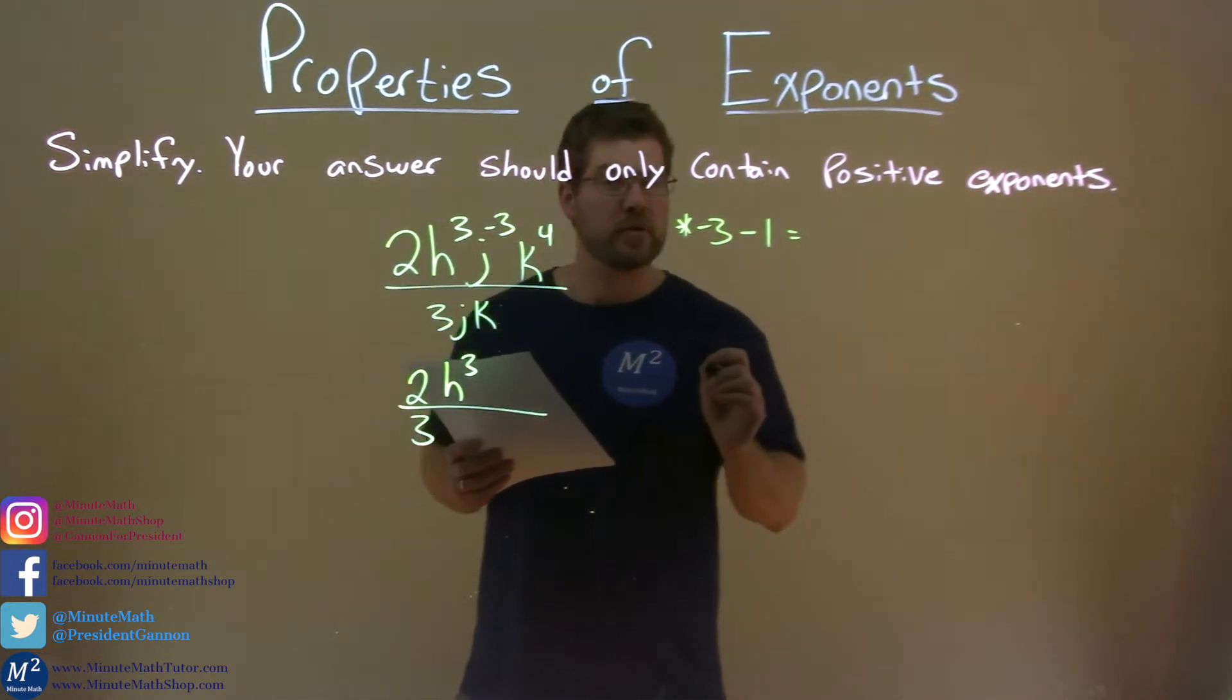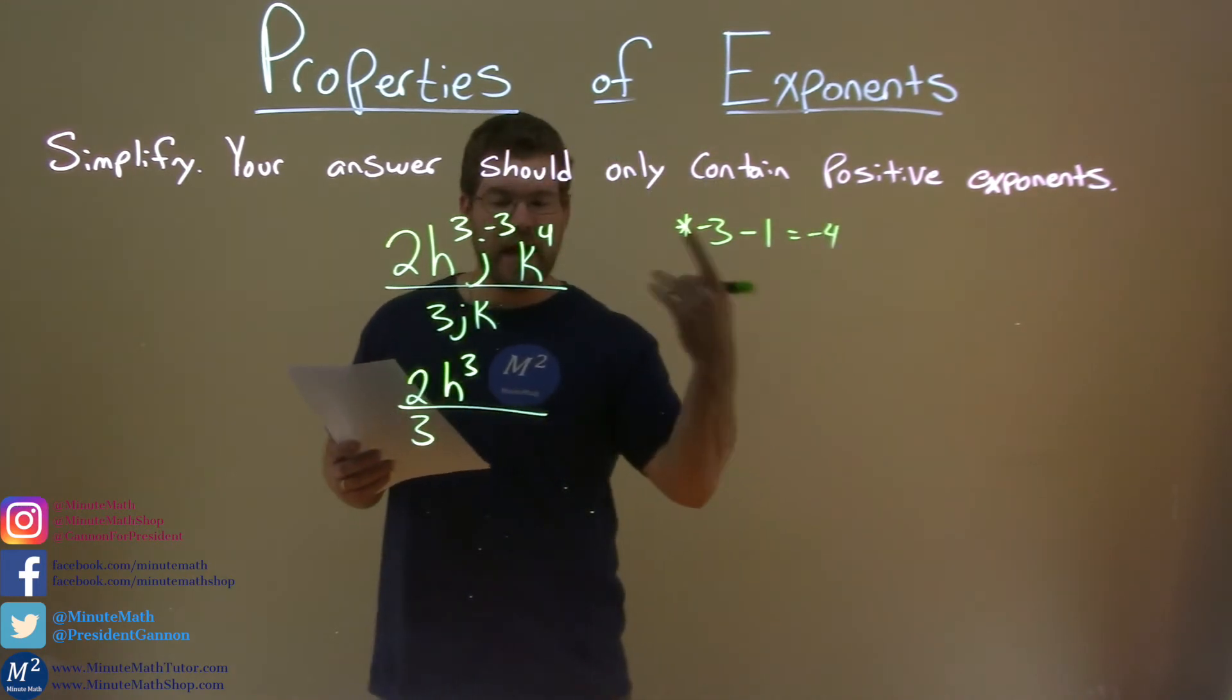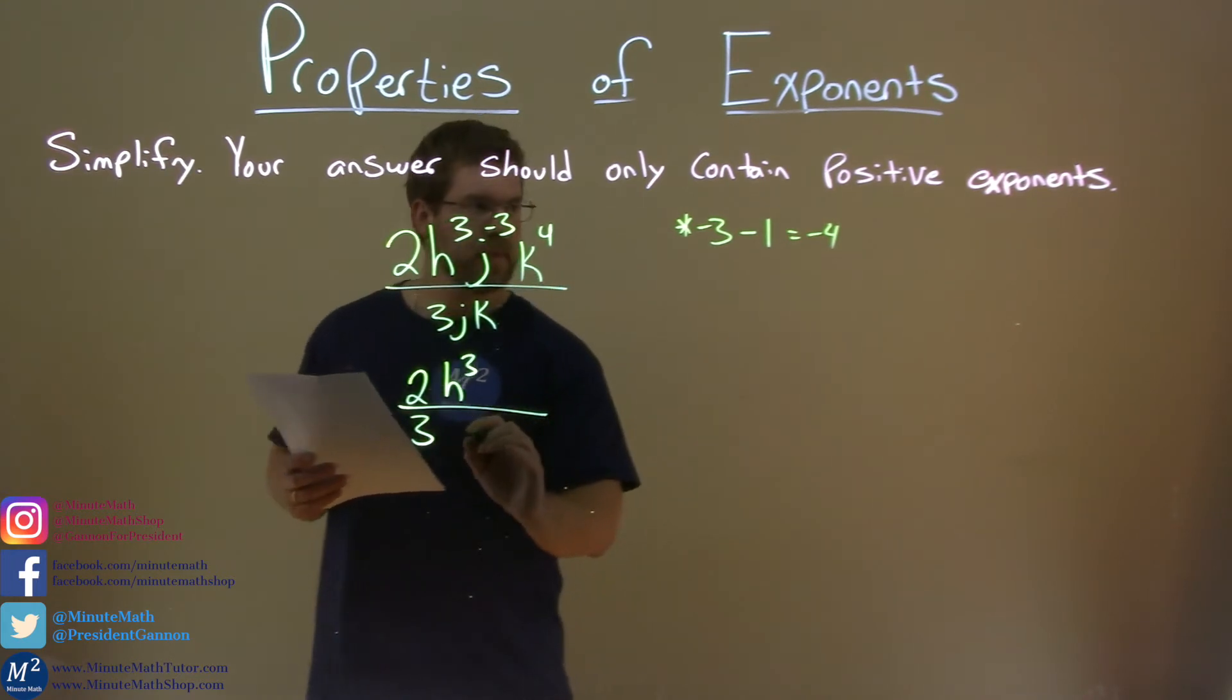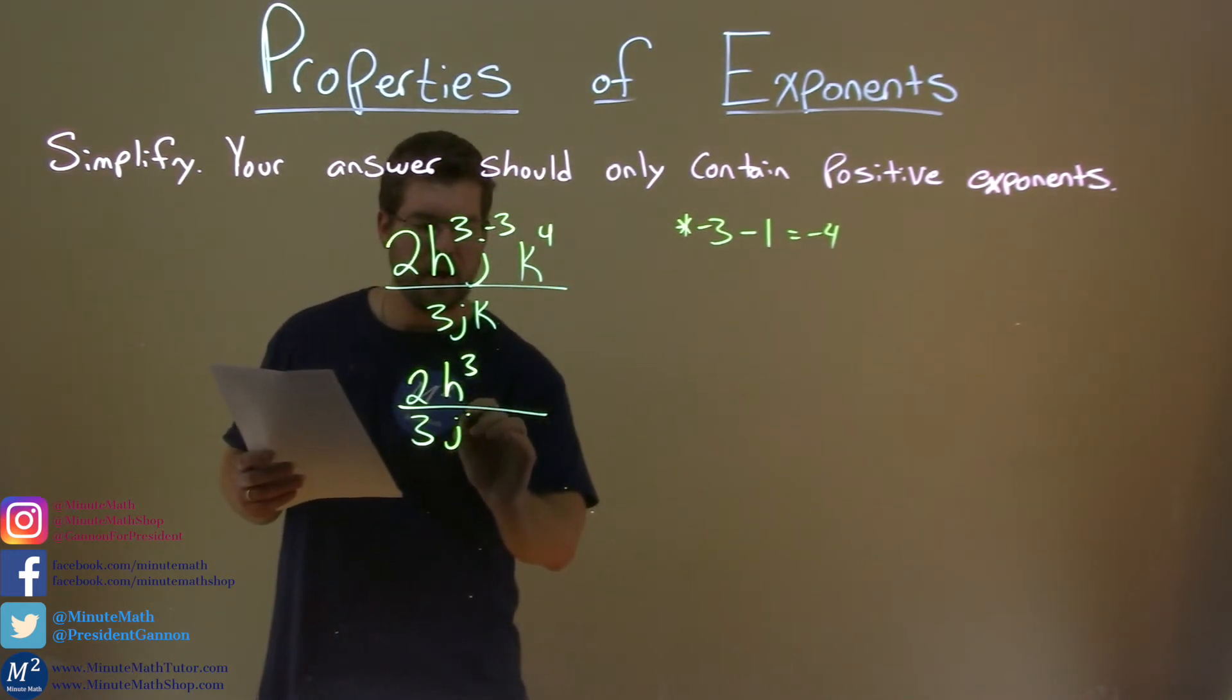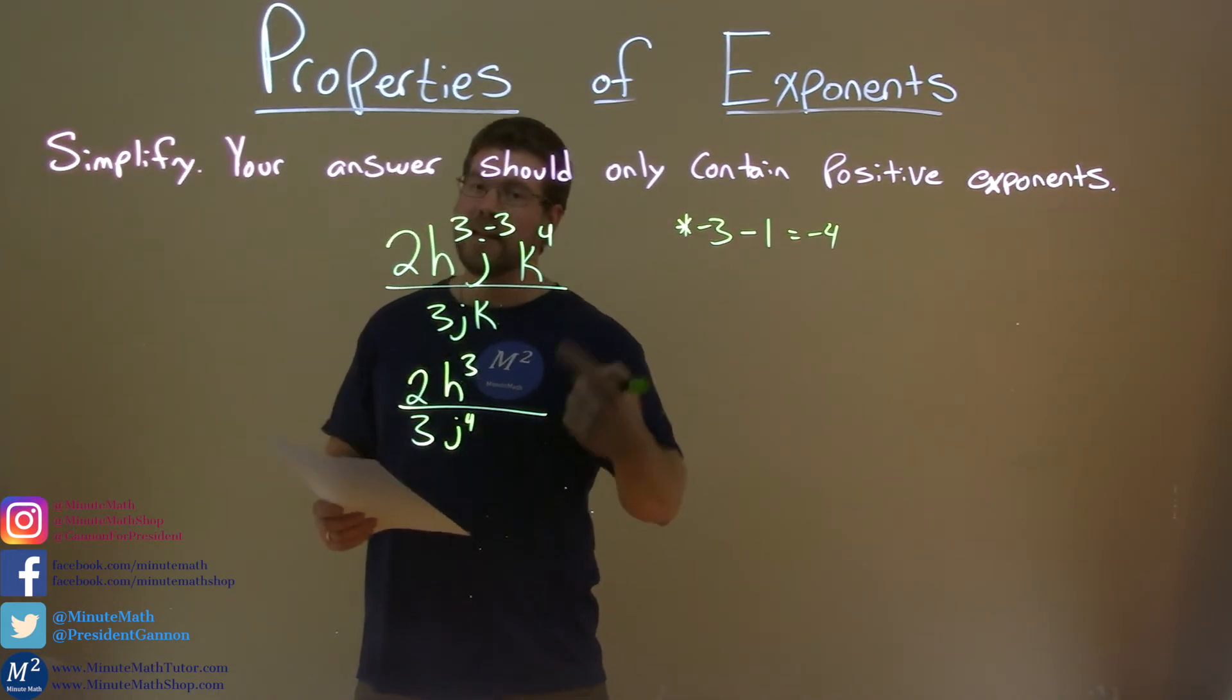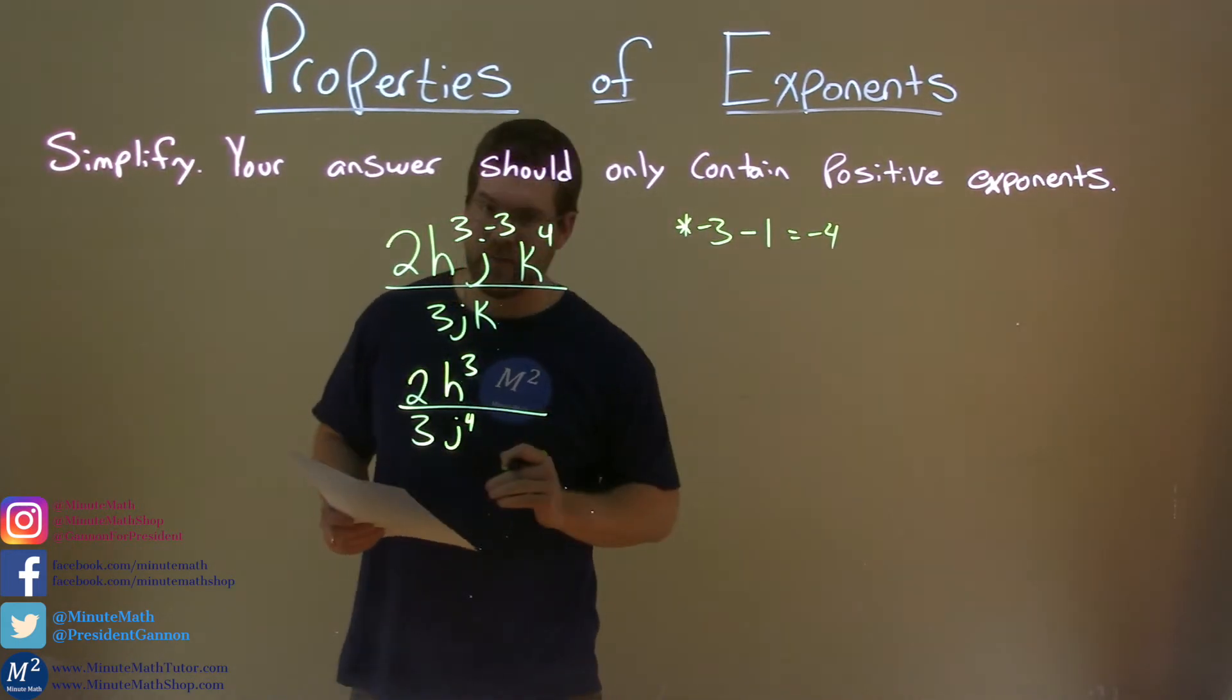That comes out to be a negative 4, which means j has a positive 4 exponent in the denominator. So we have j to the positive 4 exponent in the denominator. If it was in the numerator, it would be a negative exponent, but we need to keep it positive.